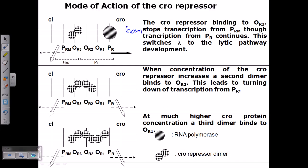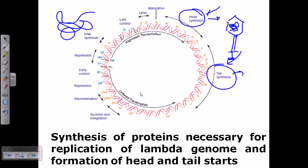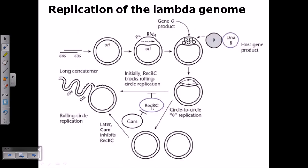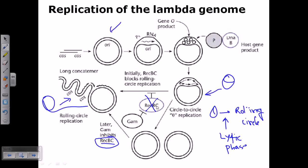right hand side. As it is expressing here, this GAM will go and it will block the activity of REC-BC. As it is blocking the activity of REC-BC, it is telling that yes, you can go from theta mode to the rolling circle mode, because previously REC-BC was blocking the theta to rolling circle mode conversion. Now as